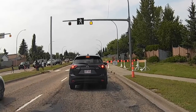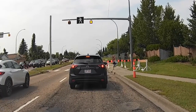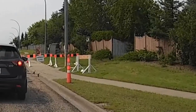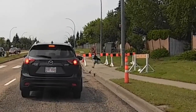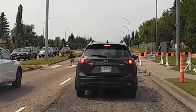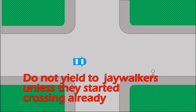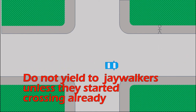Here is a good example as to why you are not allowed to pass a parked car at a crosswalk. Even though a family just went through the crosswalk, here's a kid that is running through the crosswalk to catch up. If a pedestrian wishes to cross the street and they are not at an intersection or at a marked crosswalk, then they are considered jaywalkers. Drivers should avoid stopping for jaywalkers unless they have obviously started crossing the street.